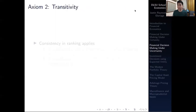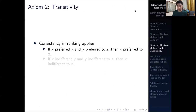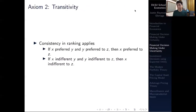The second axiom is transitivity. If I prefer X to Y, and I prefer Y to Z, then it should hold that I prefer X to Z. Similarly, if I'm indifferent between X and Y, and indifferent between Y and Z, I should also be indifferent between X and Z. It's the same transitivity assumption as before, ensuring consistency.